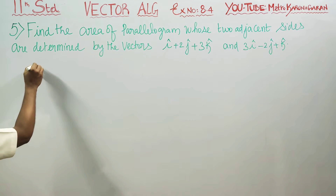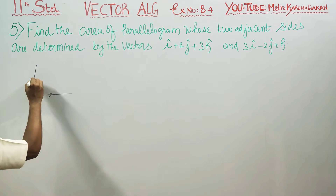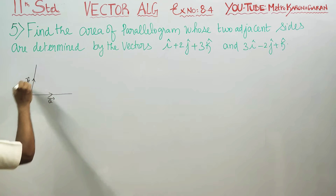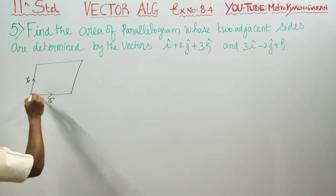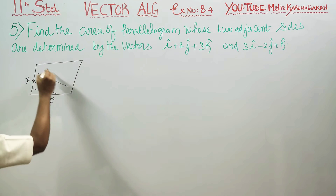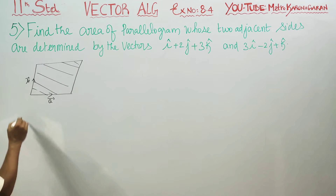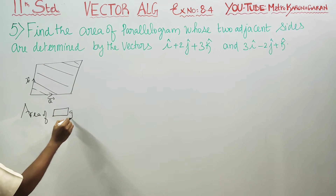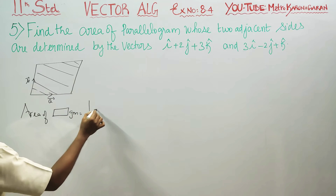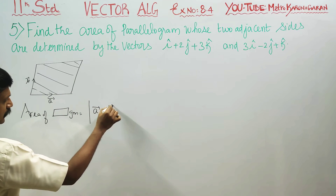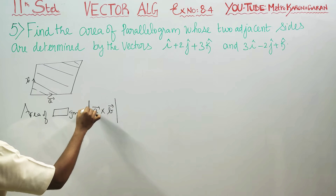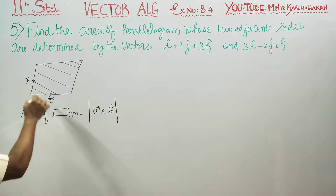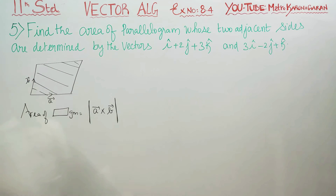Two vectors are determined by the vectors A vector and B vector. The area of the parallelogram is given by the formula: magnitude of A cross B. Where A and B are adjacent sides of the parallelogram.